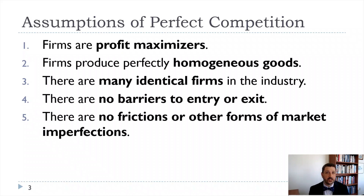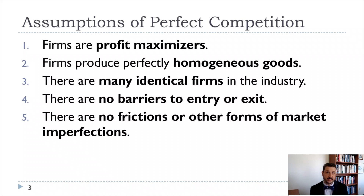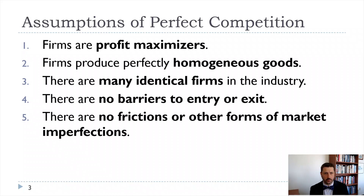The second assumption is probably true in a lot of commodity markets but not true in most others: firms produce perfectly homogeneous goods, meaning all goods are exactly the same and you can't tell the difference between a good from one firm versus another. If we're talking about iron ore, corn, or soybeans, that's probably true. But for a lot of consumer products, that's very much not true.